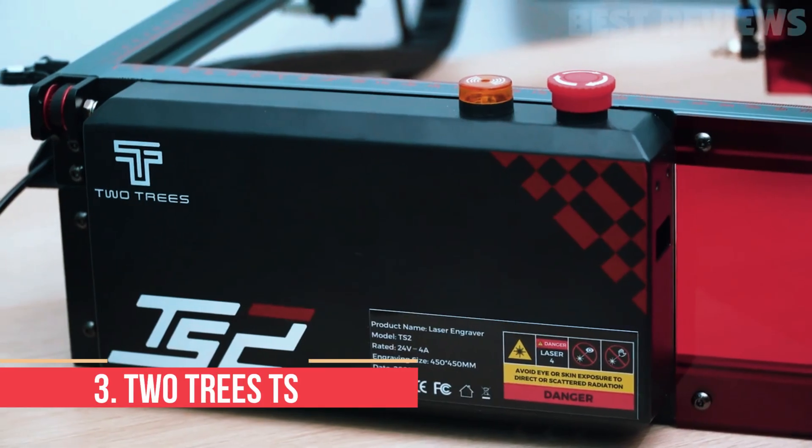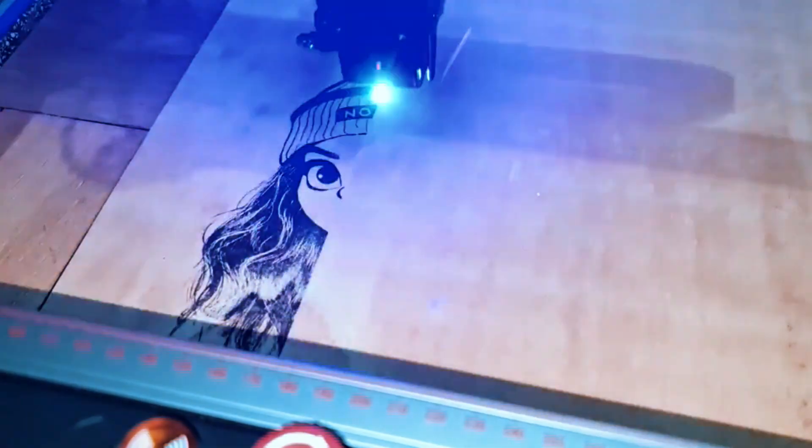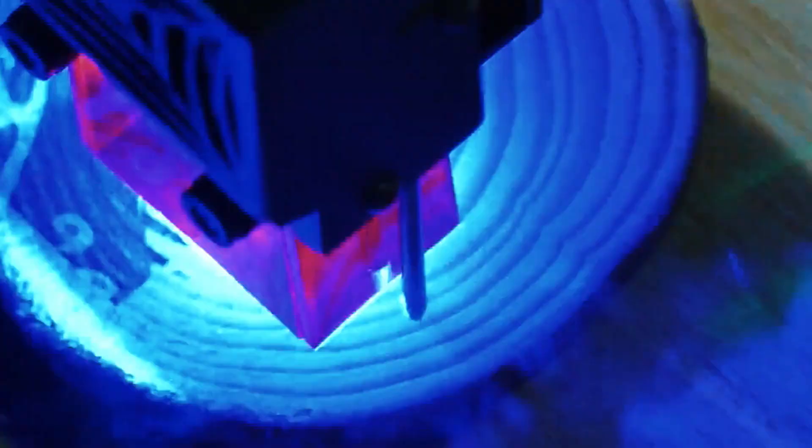Number three: Two Trees TS2. Creators who want to step up in power and versatility often look toward this machine because it delivers stronger performance without jumping into full industrial territory.